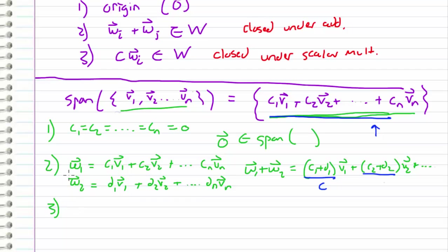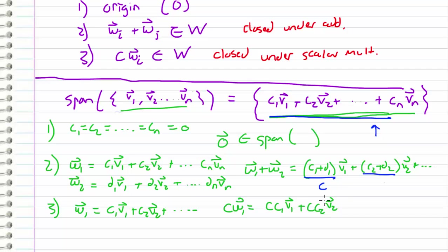For closure under scalar multiplication: take W1 = C1·V1 + C2·V2 + ..., and multiply by scalar C. We get C·C1·V1 + C·C2·V2 + ..., and C·C1 and C·C2 are just new constants, fitting the same span form. So the scalar product is in the span, confirming it is closed under scalar multiplication. Therefore, the span of any given vector set is a subspace of the vector space the vectors exist in.